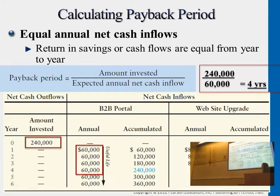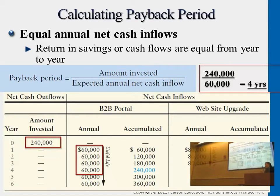In terms of the return for the B2B portal, every single year they're getting $60,000 — second year $60,000, third year $60,000. For the website, they're getting $80,000. So at first glance, it seems like the website is more attractive than the other.